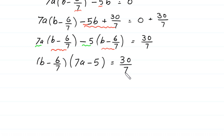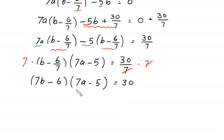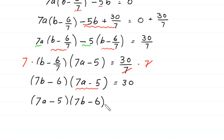Now because we have 7 in the denominator, we multiply both sides by 7: (7b minus 6) times (7a minus 5) is equal to 30. We write this as (7a minus 5) times (7b minus 6) is equal to 30.